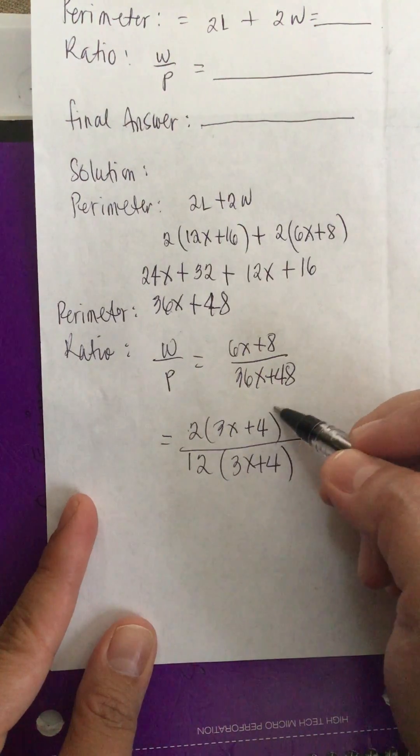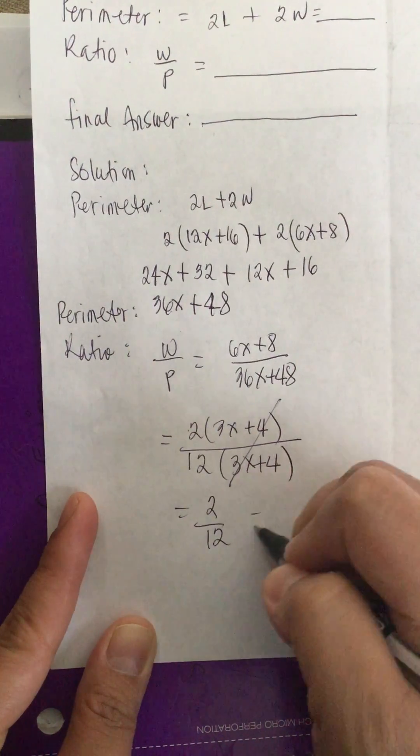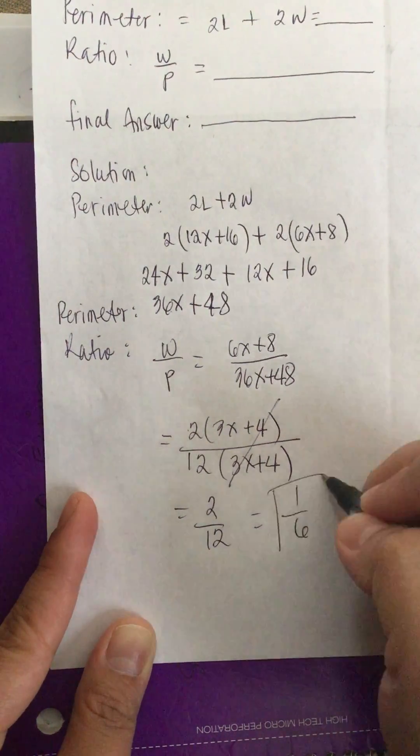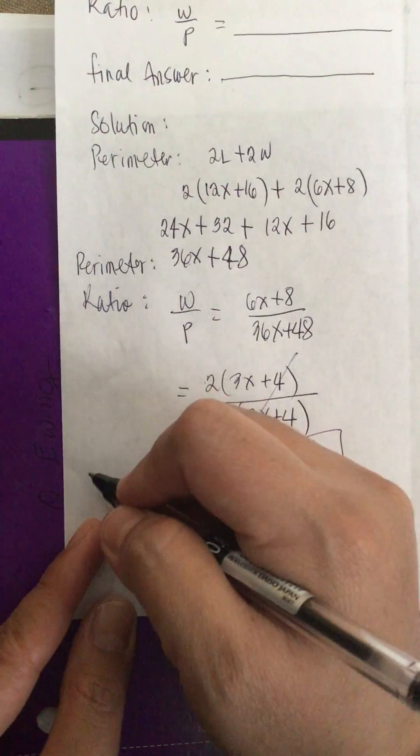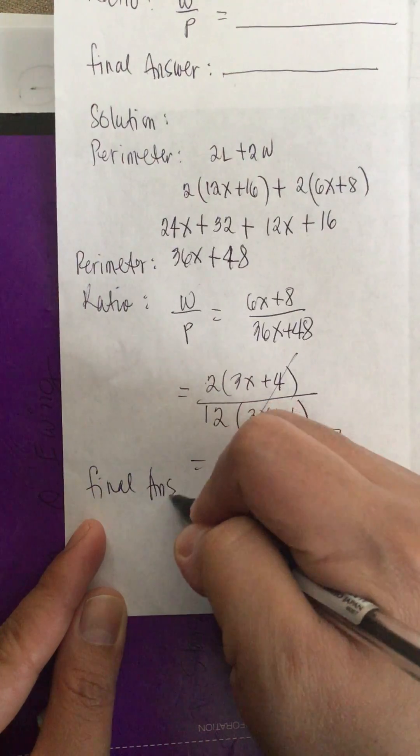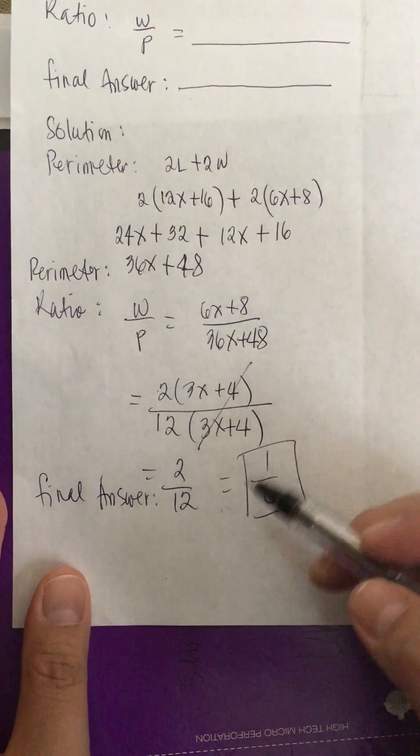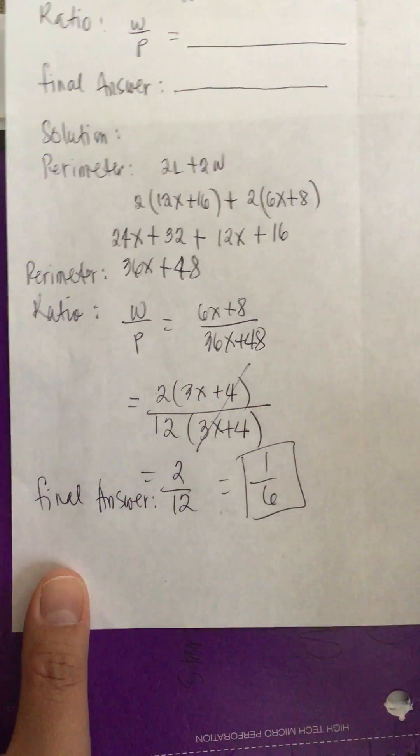The 3x plus 4 terms cancel out, leaving 2 over 12, which equals 1 over 6. This is the final answer. The ratio is 1 over 6. Thank you.